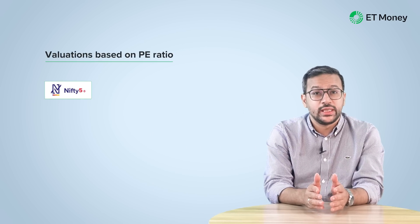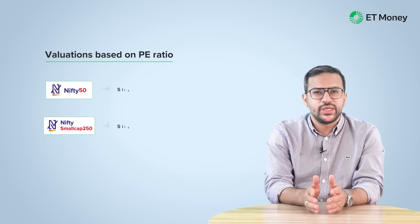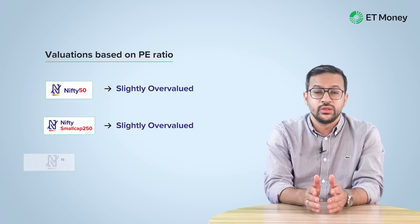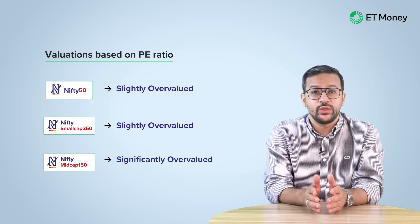The conclusion is based on analyzing just one parameter — the price to earnings ratio. When analyzing the three indices, we looked at trailing and forward PE. There are some assumptions we need to make for calculating the forward PE, and there is always a possibility that things can turn out differently. Looking at the combination of trailing and forward PE ratios can be a good indicator of understanding equity market valuations. For the current scenario, the large cap and small cap appear to be slightly above their long-term PE valuation, while the mid caps appear to be in overvalued territory.